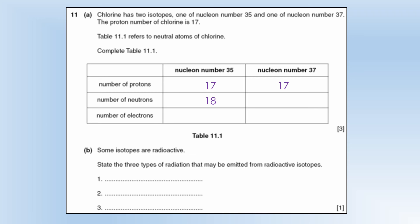Isotopes have the same proton number, but they have different neutron numbers, and we do 35 minus 17 to get 18, and 37 minus 17 to give us 20. Electrons is always going to balance out the number of protons, so that's going to be 17 as well.